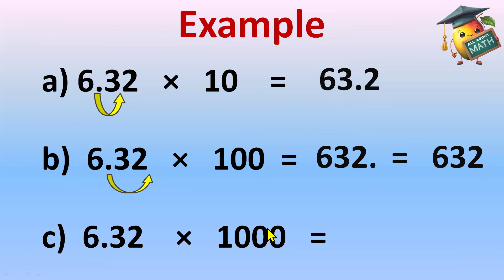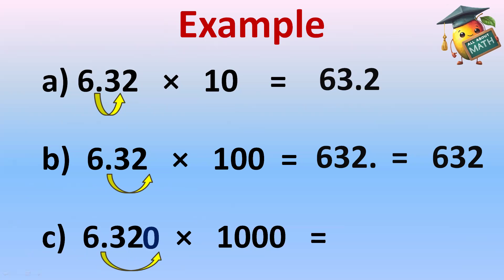6.32 multiplied by one thousand: the decimal will be shifted three digits because there are three zeros in thousand. But here we only have two digits after the decimal, so we need to add one zero to make three digits. Now the decimal can be shifted three places to the right, and the answer is 6320. We can drop the decimal point since we only have the whole part, so the answer is six thousand three hundred twenty.